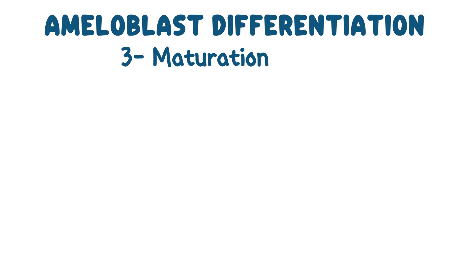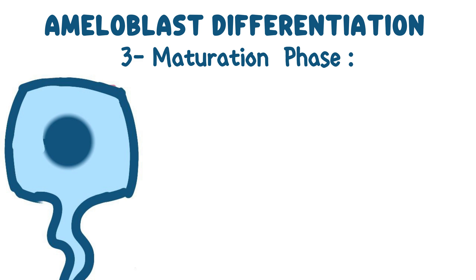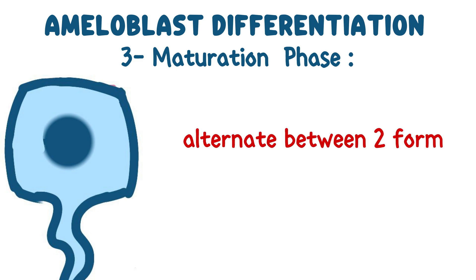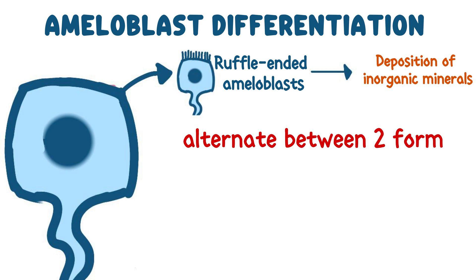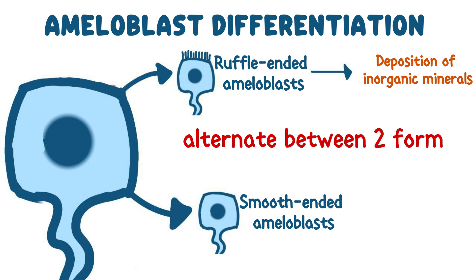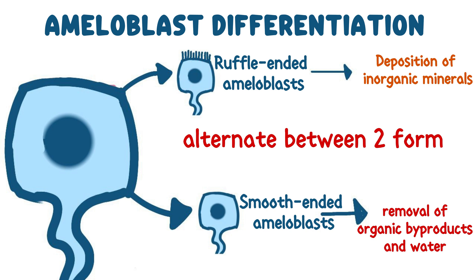Stage 3: Maturation phase. During the maturation phase, ameloblasts undergo further morphological changes to ensure the enamel becomes fully mineralized and achieves its final hardness. Ruffle-ended ameloblasts facilitate the deposition of inorganic minerals, primarily hydroxyapatite crystals, into the enamel matrix to increase mineral density. Smooth-ended ameloblasts are involved in the removal of organic byproducts and water from the enamel matrix, creating space for further mineral deposition.